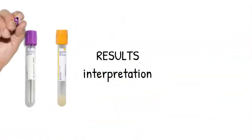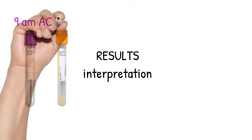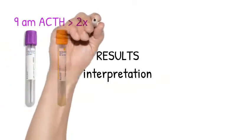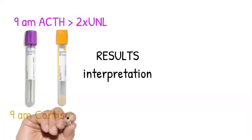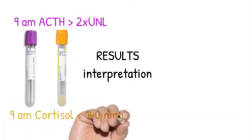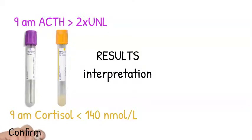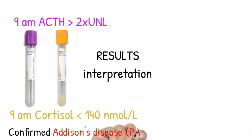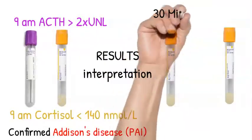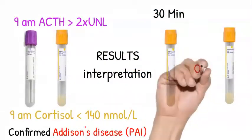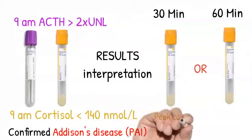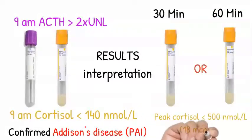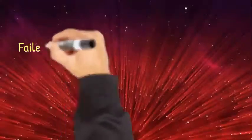For results interpretation: if the 9am ACTH sample is more than two times the upper normal limit along with a 9am cortisol below 140 nanomoles per liter, this confirms primary adrenal insufficiency or Addison's disease. If you have done a short synacthen test, a peak cortisol level at 30 minutes or 60 minutes below 500 nanomoles per liter indicates a failed short synacthen test.